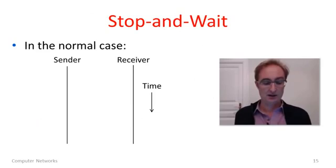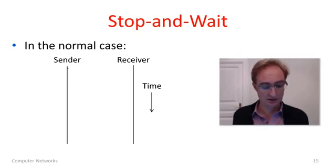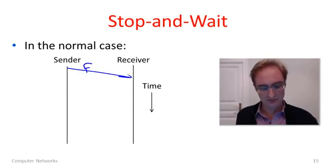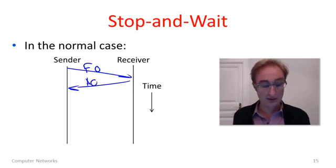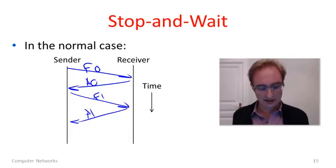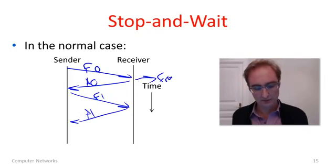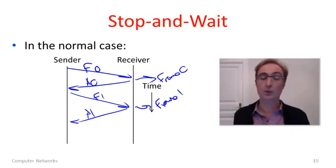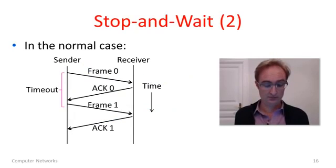Let's see stop-and-wait in action. With a single bit we have two states, which we'll just call 0 and 1, alternating packets and numbering them 0, 1, 0, 1. The sender sends frame F0 and receives ACK A0. Then it advances to the next frame, sends F1, and receives ACK A1. At the receiver, we can see frame 0 arrive and then frame 1 — we have a way to distinguish these two.